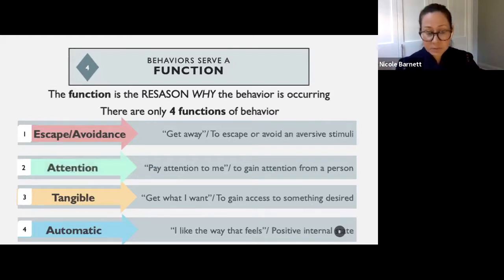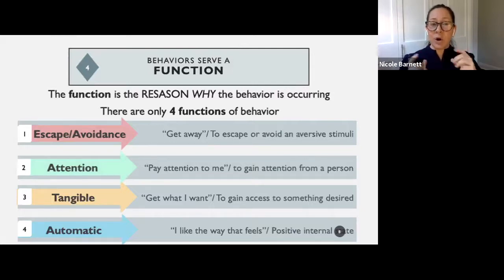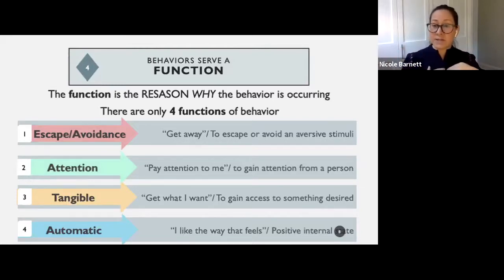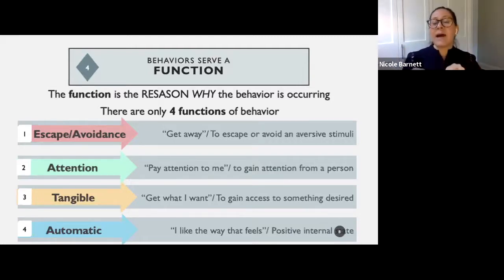The next is tangible — we call it tangible because it's to get something, to obtain something. I do something to get what I want or to gain access to something desired. That could be an item or an activity. And the fourth is what we call automatic — another word used for this function is sensory. It's more of an internal thing: I do something because it feels good inside, or I do something because it makes me feel less anxious.